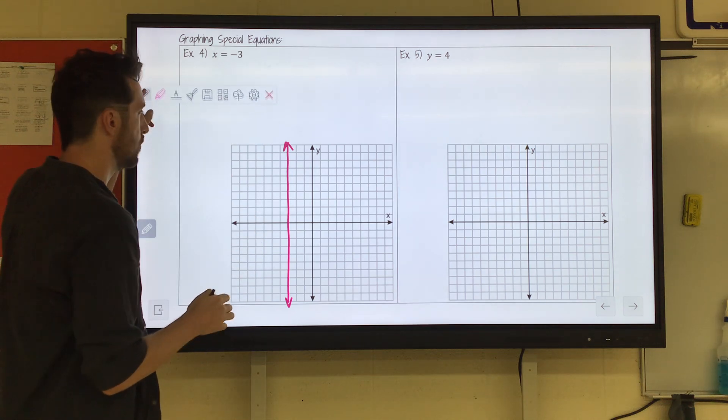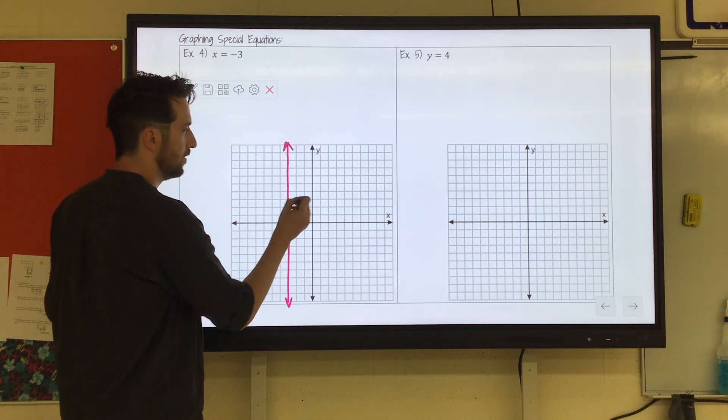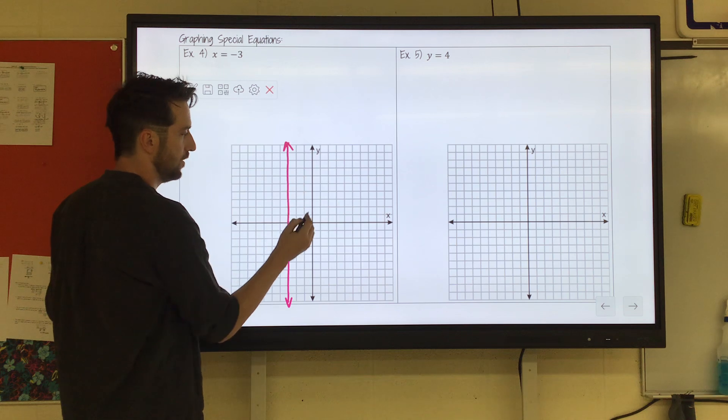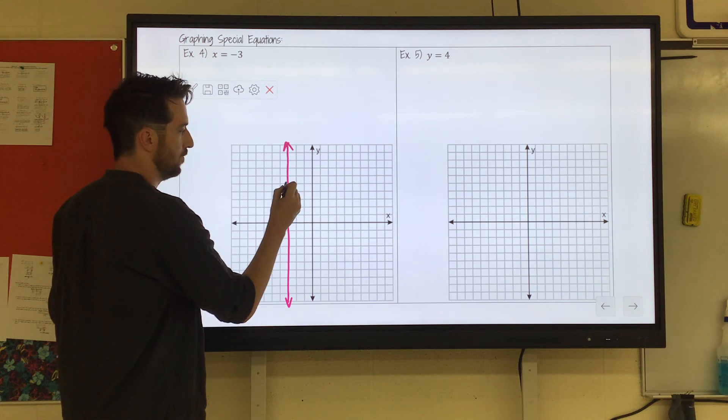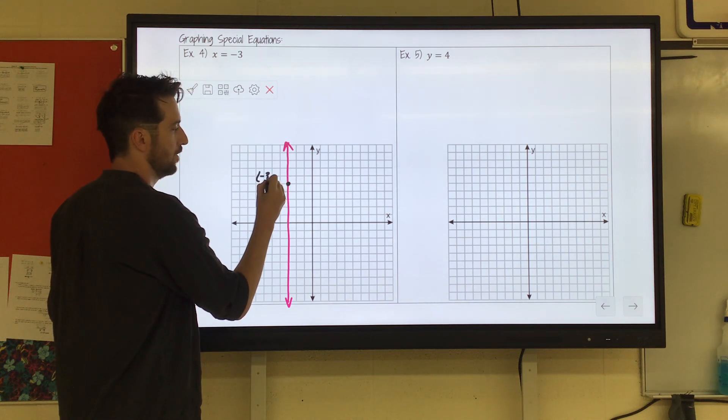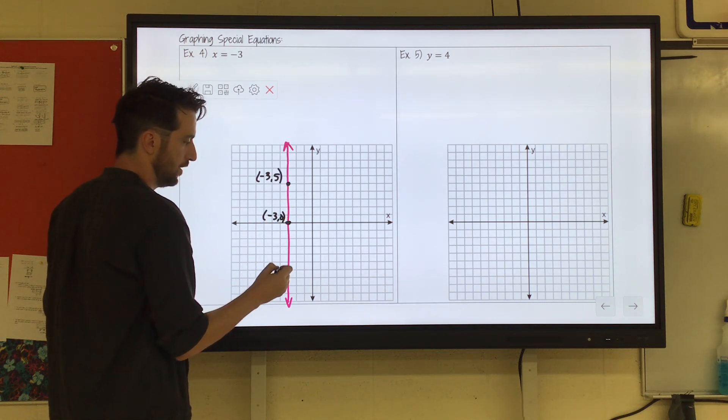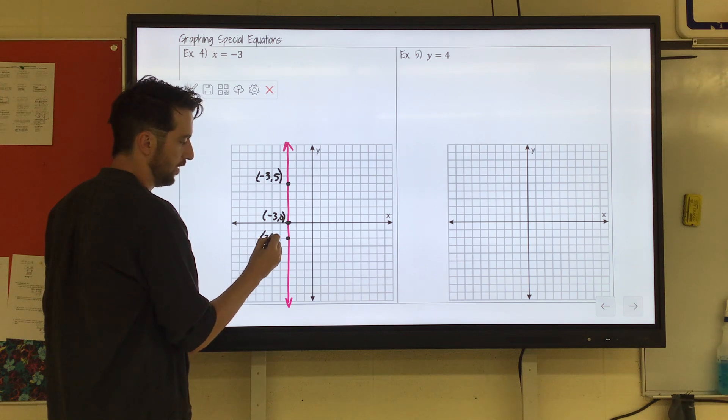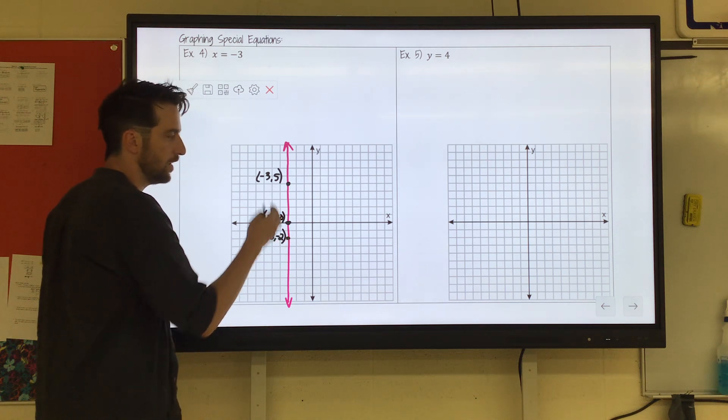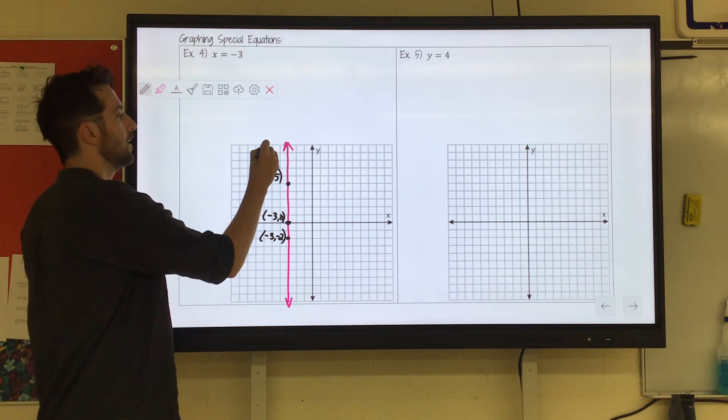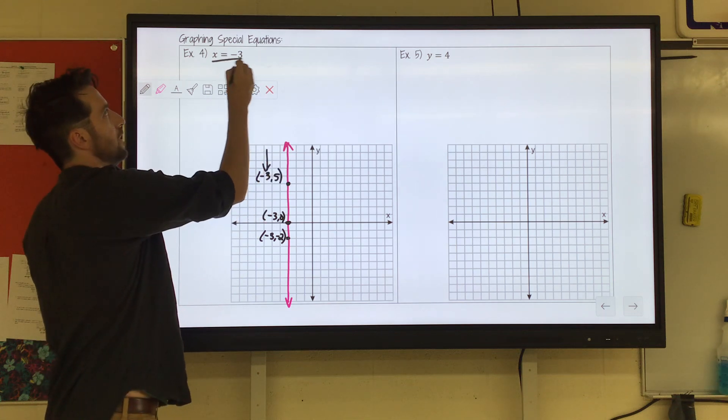Now, if you look at any coordinate on this line, like here is negative 3, 1, 2, 3, 4, 5. Here is negative 3, 0. Here's negative 3, negative 2. Any coordinate on this line, the x's will equal negative 3.